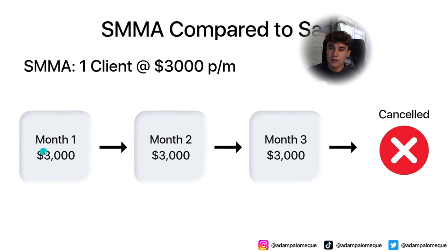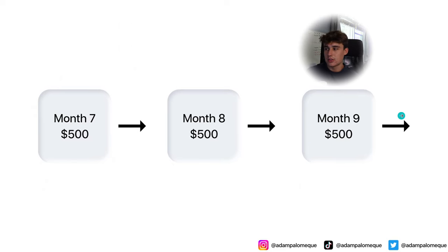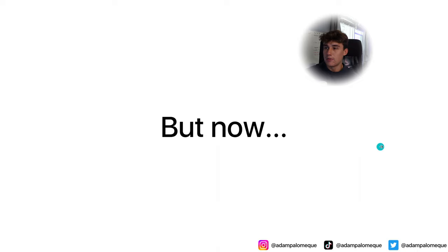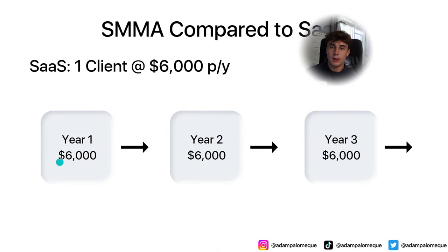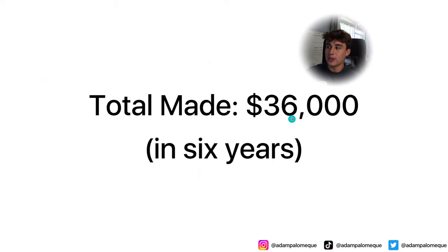So $6,000 and pretty passive. Whereas in SMA you're doing work every single month — but with SaaS you set up one time and after that it's all passive and you can just keep going. Looking at it in a bigger perspective: you get paid $6,000 per year — year one $6,000, year two $6,000, year three $6,000 — and you set it up that first time and that's it, no work done. Total made $36,000 in six years, passively. All you did was offer them missed call text back and the rest of the features of GoHighLevel, and they're just paying to keep that system because their whole business relies on it.